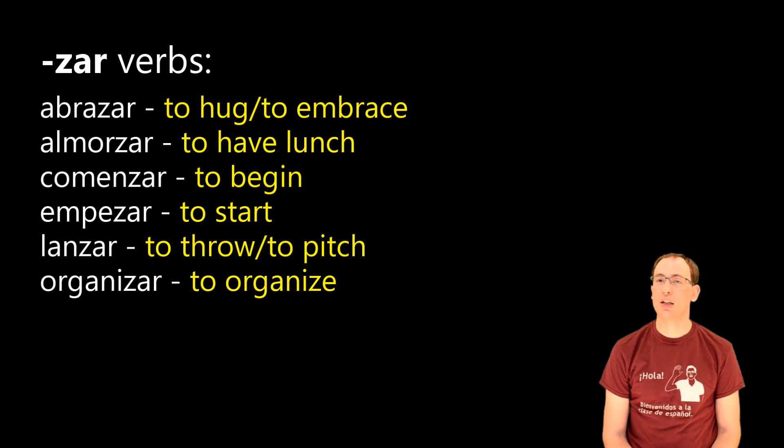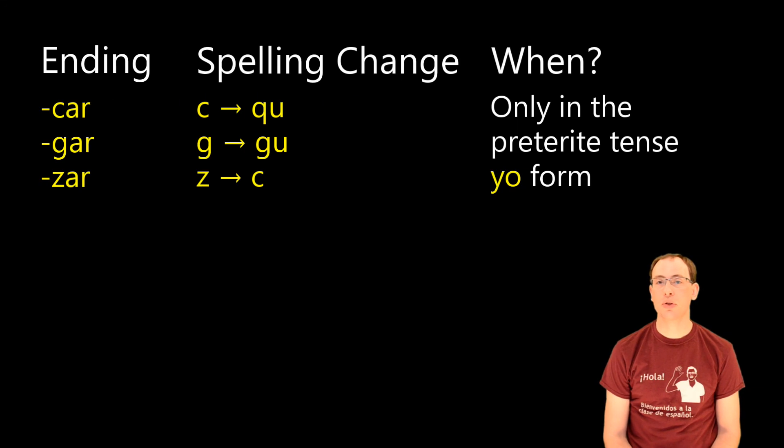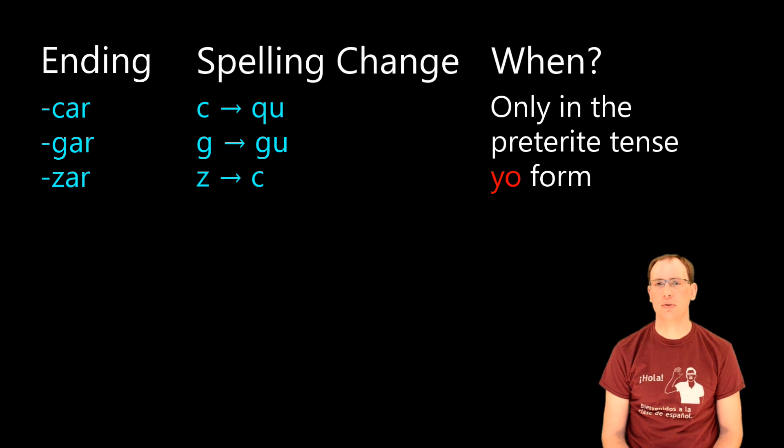When conjugating car-gar-zar verbs in the preterite tense, remember that they're regular, they sound normal. But when writing them, you need to make some spelling changes in the yo form only. For car verbs, the c changes to qu; gar verbs, g to gu; and zar verbs, z to c. Again, that's only in the yo form, no other forms in the preterite tense. Gracias por ver este video. Adios.